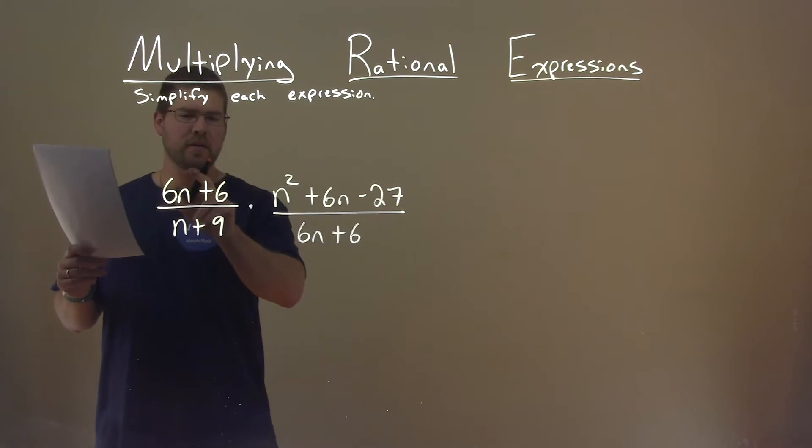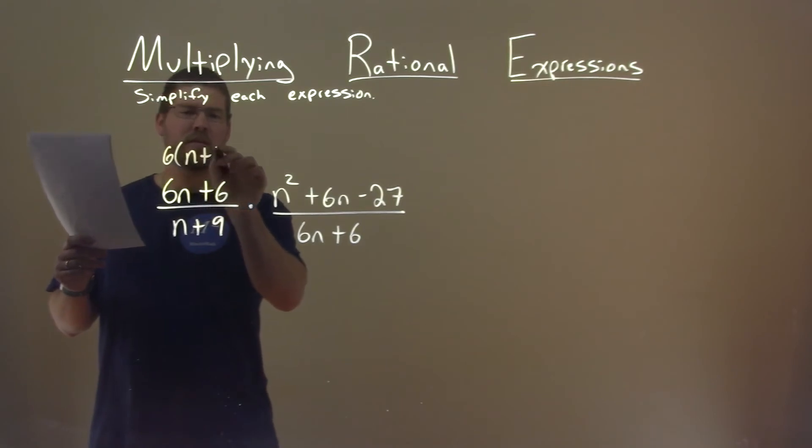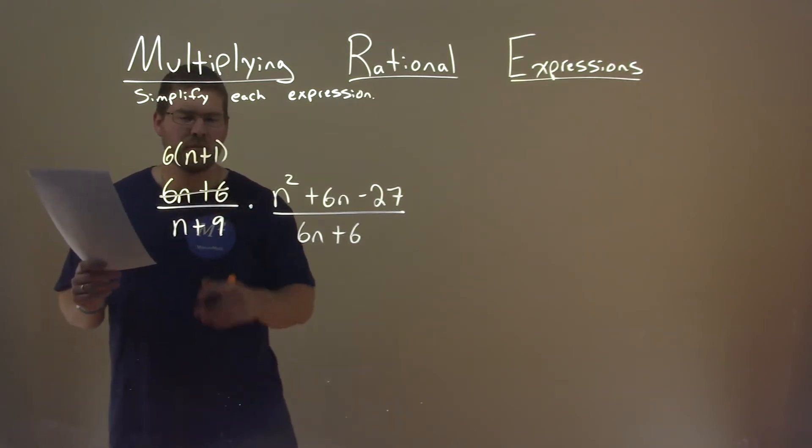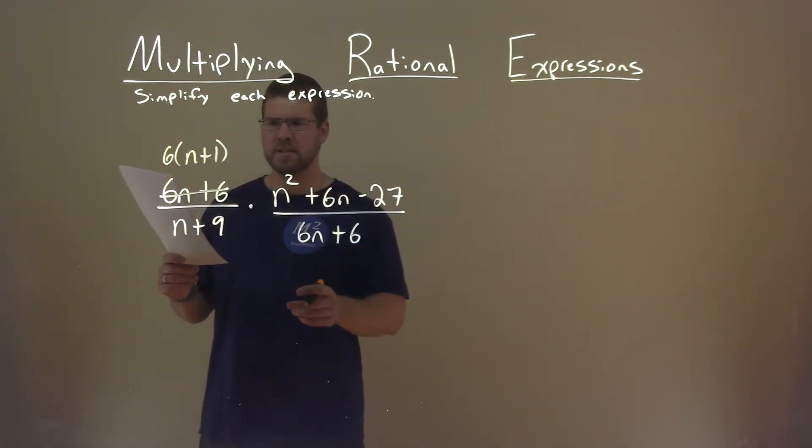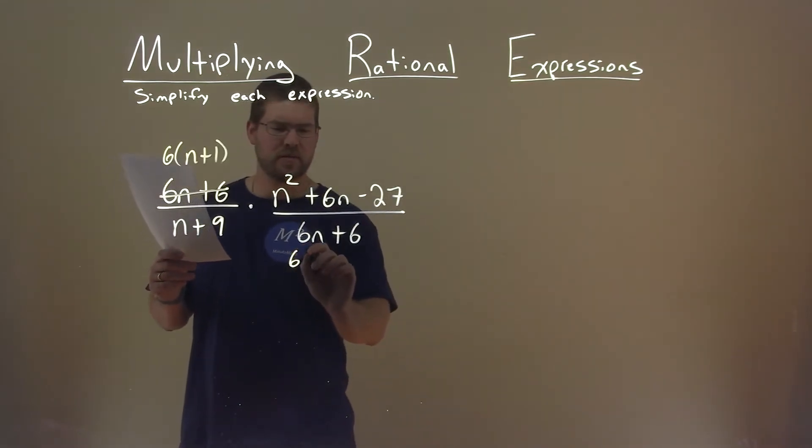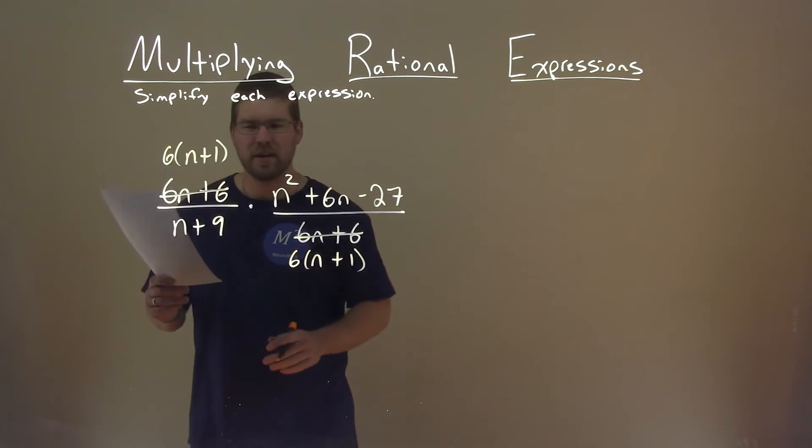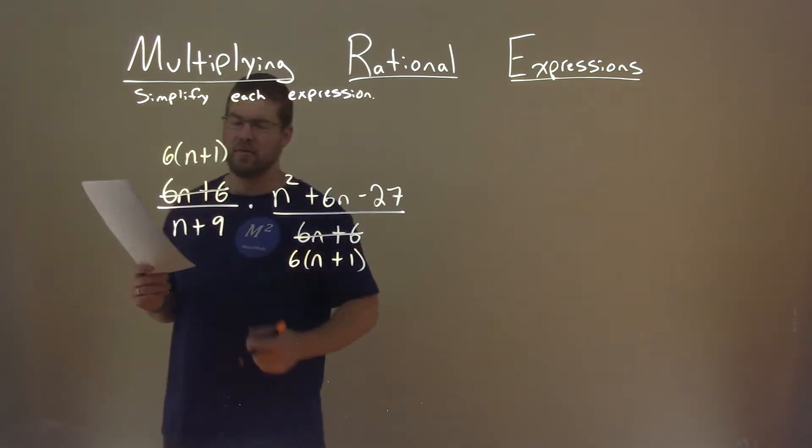Well, let's go simplify what we can. Let's factor some things out. 6n plus 6, I'm going to pull out a 6, and I'm going to put an n plus 1 here. So let's go replace that. And actually, that same thing happens out here. 6 times n plus 1, right here, pull out that 6. And at the end, we actually probably could have just canceled those two out.